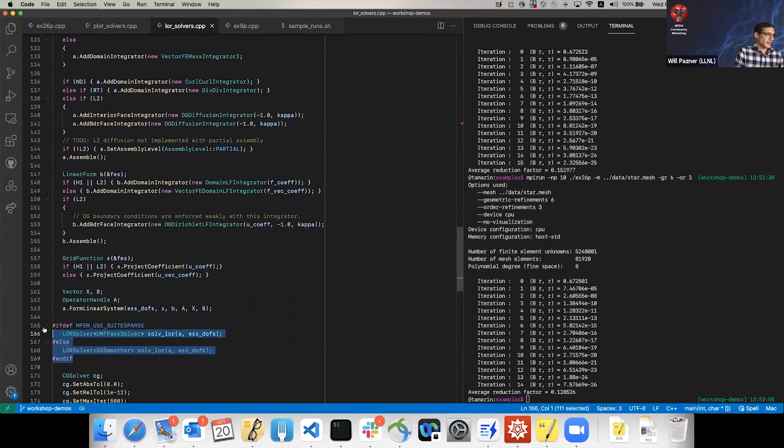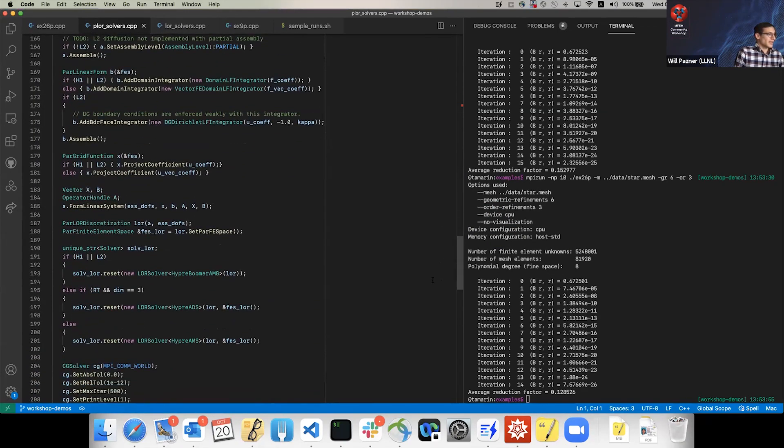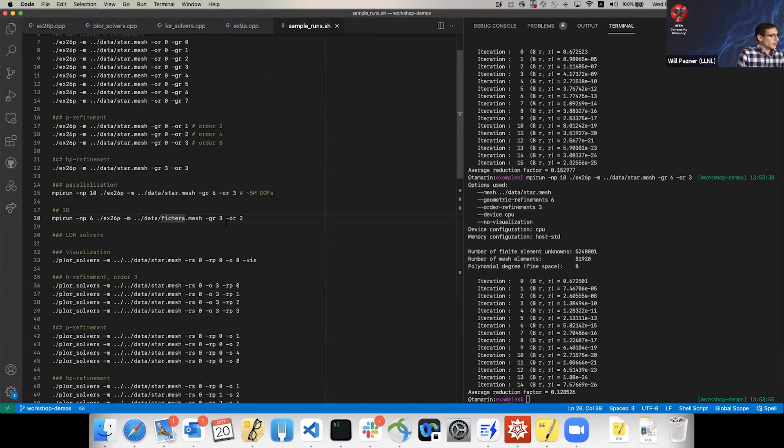Then here are the solvers - it's just a one-liner. This is the serial version. In the parallel version, AMS and ADS need a bit more information, not based on just the operator. So it's not a one-liner, but it's like a two-liner. You create an LOR discretization in one line, then create either an AMG preconditioner or ADS preconditioner or AMS preconditioner using the low-order refined discretization.